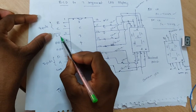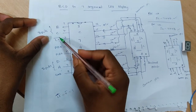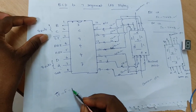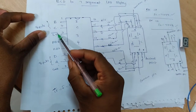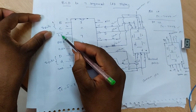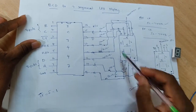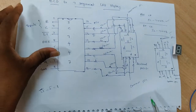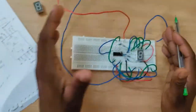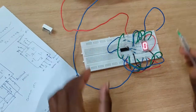The 3rd pin is the LT bar. If LT bar is 0 — since 0 bar means 1, that is the actual enable input — the LT bar is activated. This makes it easy to check whether the 7 segment LED is working or not. This circuit diagram is connected on the breadboard, and next we switch on the fixed power supply.